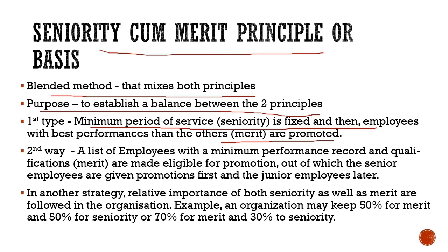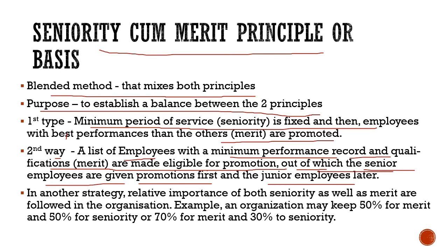The second way is the reverse of the first: a list is first made of meritorious employees with a minimum performance record and qualifications, and out of that list, the senior employees are given promotion first, then junior employees. Yeh first type ka opposite hai — pehle meritorious candidates ki list banti hai, aur usmein se sirf unhi candidates ko promotion milta hai jo senior hain.